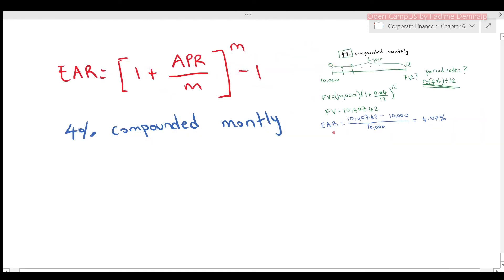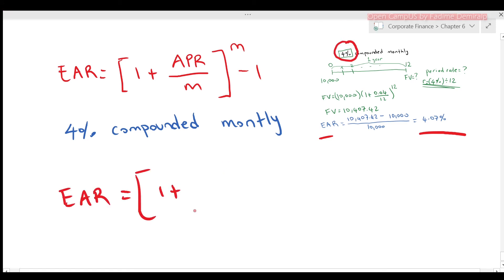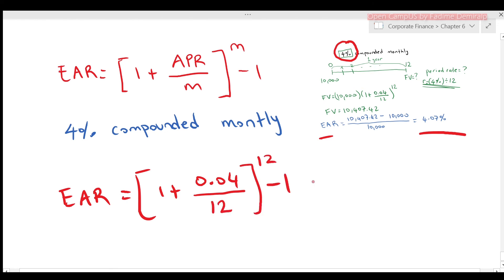I found the effective annual rate is 4.07% by calculating the future value first and then the growth rate. Using the formula directly: (1 + 0.04/12)^12 − 1 gives the same answer, 4.07%. To find the EAR using a financial calculator: enter the nominal rate as 4, set C/Y (compounding periods per year) to 12, then compute EFF to get 4.0742%.